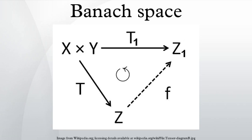Thus, the vector space B(X, Y) can be given the operator norm. For Y a Banach space, B(X, Y) is a Banach space with respect to this norm. If X is a Banach space, the space B(X) = B(X, X) forms a unital Banach algebra. The multiplication operation is given by the composition of linear maps.